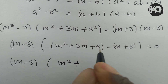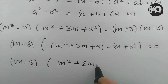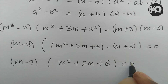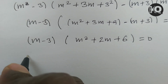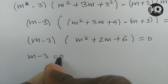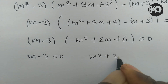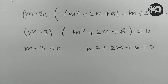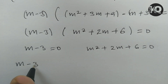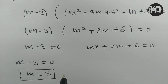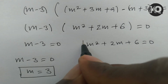Simplifying the bracket: m squared plus 3m plus 9 minus m minus 3 gives m squared plus 2m plus 6. So we have (m minus 3)(m squared plus 2m plus 6) equals 0. By the zero product identity, m minus 3 equals 0, so m equals 3 is the first solution, m₁ = 3.